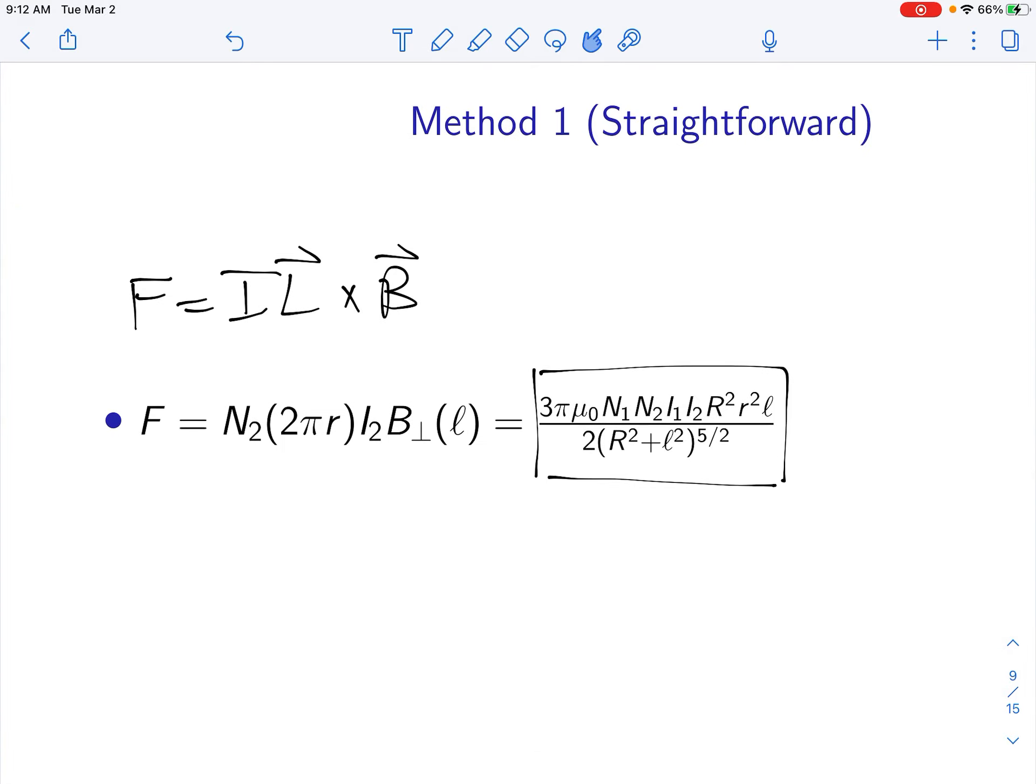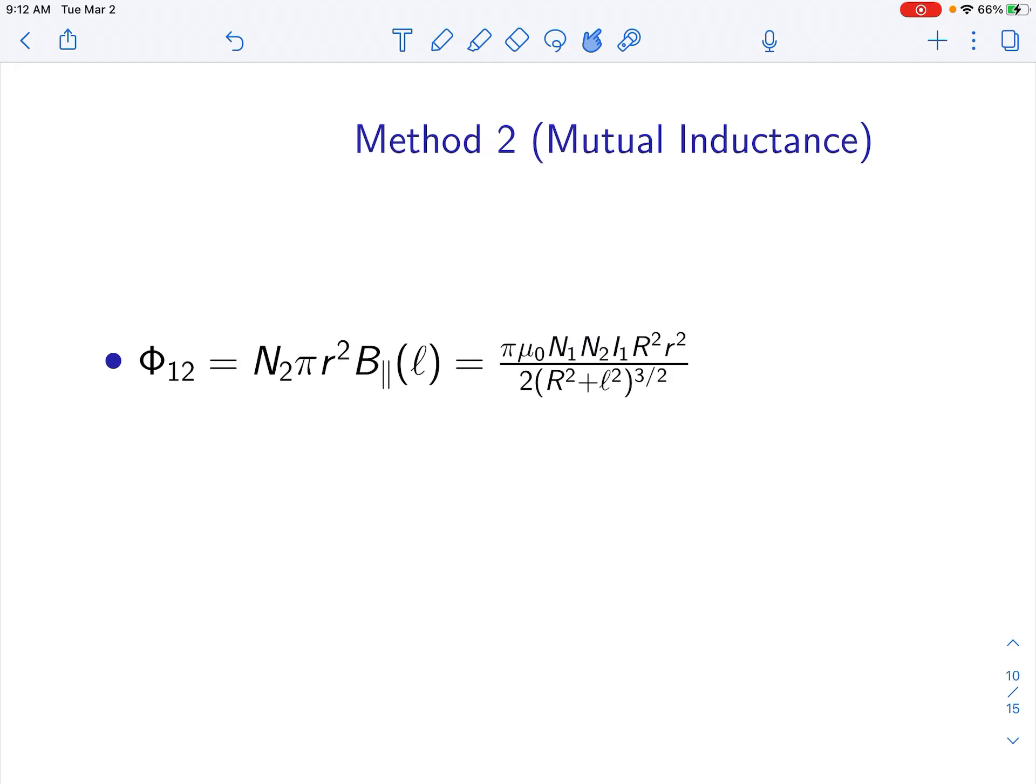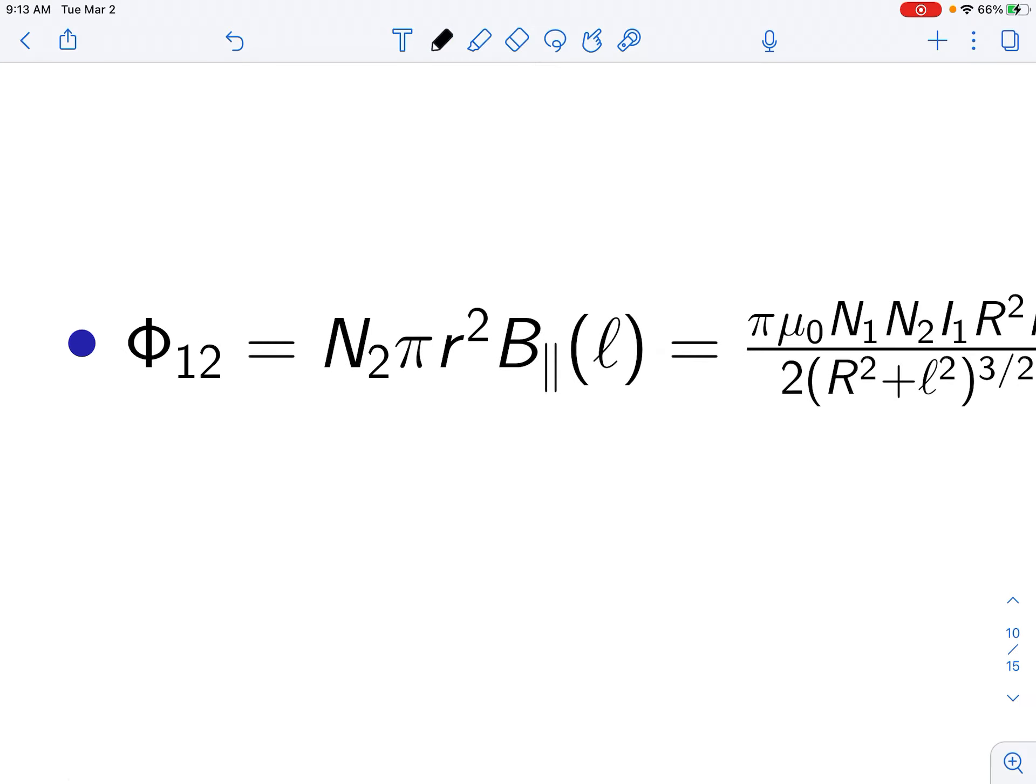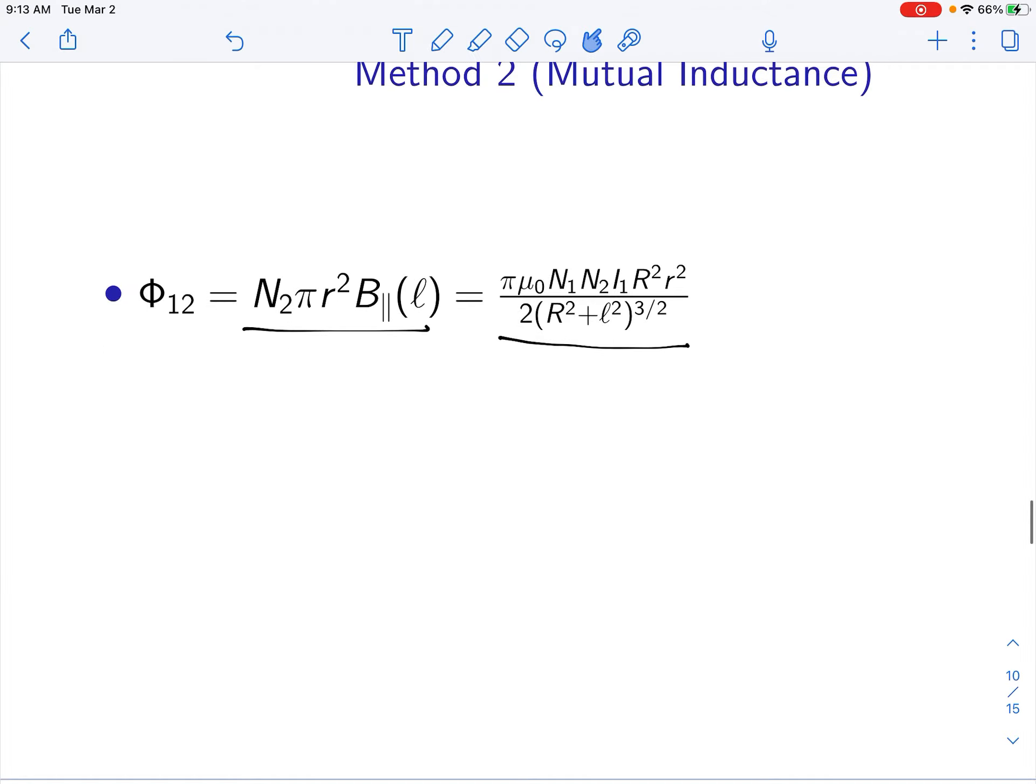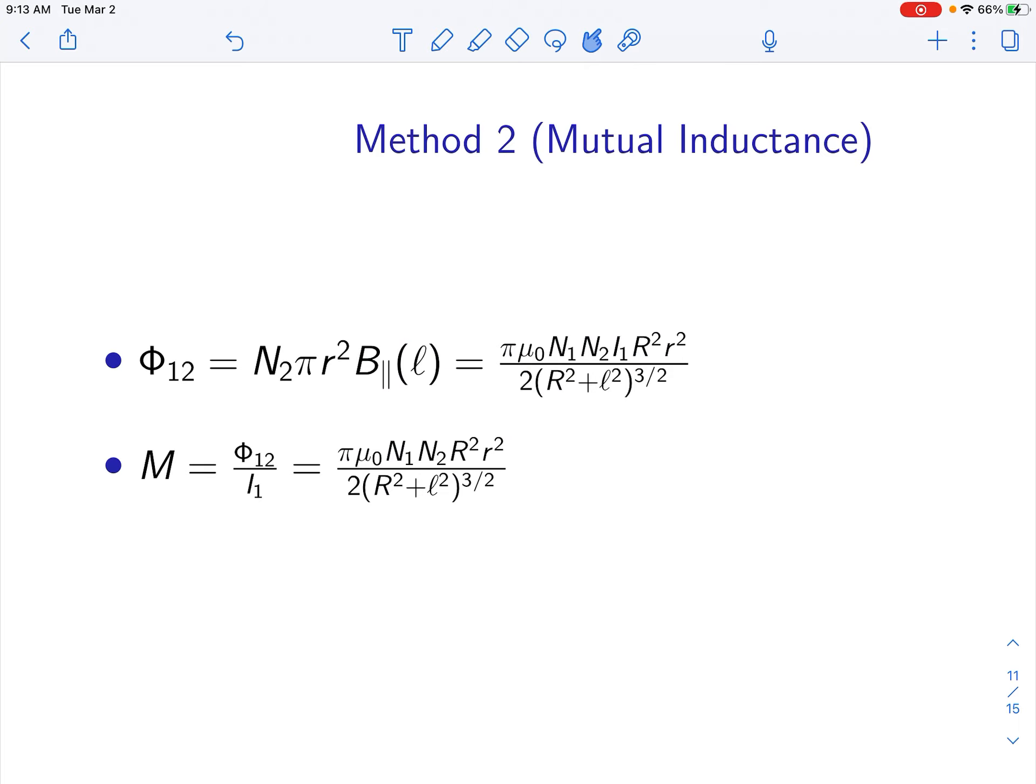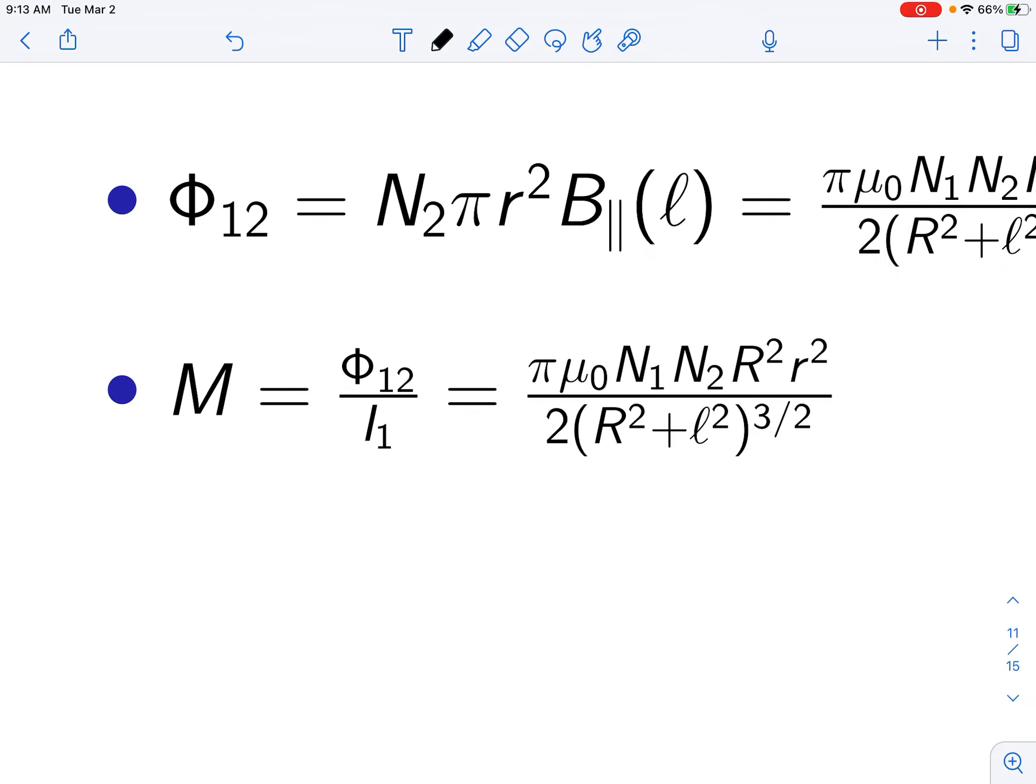There is another way that you can do this problem, namely mutual inductance. Since the two wire loops are mutually attracted to each other, they have mutual inductance. If we consider the flux through one of these solenoids, we already calculated the parallel component. We know that the mutual inductance is just the flux over the current. So we have this formula.